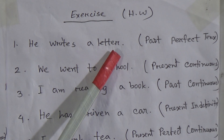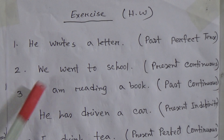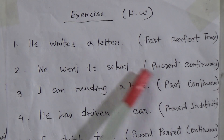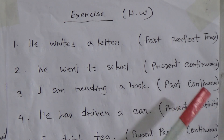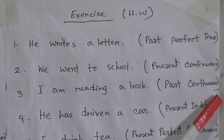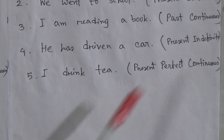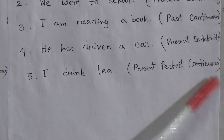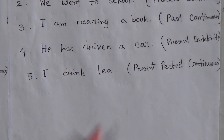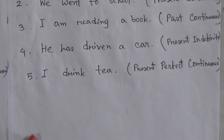Number one: 'He writes a letter' — change into past perfect tense. Number two: 'We went to school' — change into present continuous tense. Number three: 'I am reading a book' — change into past continuous tense. Number four: 'He has driven a car' — change into present indefinite tense. Number five: 'I drink tea' — change into present perfect continuous tense.